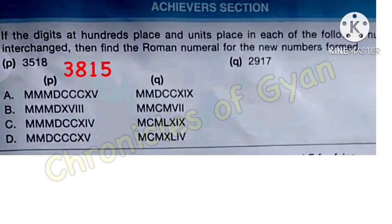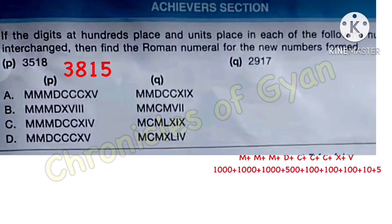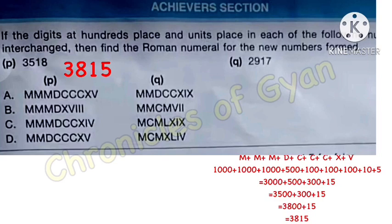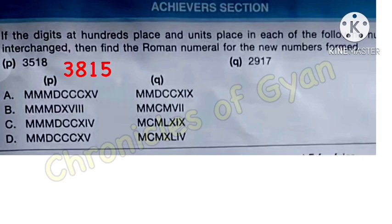Now we will find the Roman numeral for 3815. M for 1000, M again for 1000, and M again for 1000 — so 3M gives 3000. Then D is 500 and C is 100, giving 3600. Two more C's give 3800. Finally, X is 10 and V is 5, giving 3815. This matches option A.